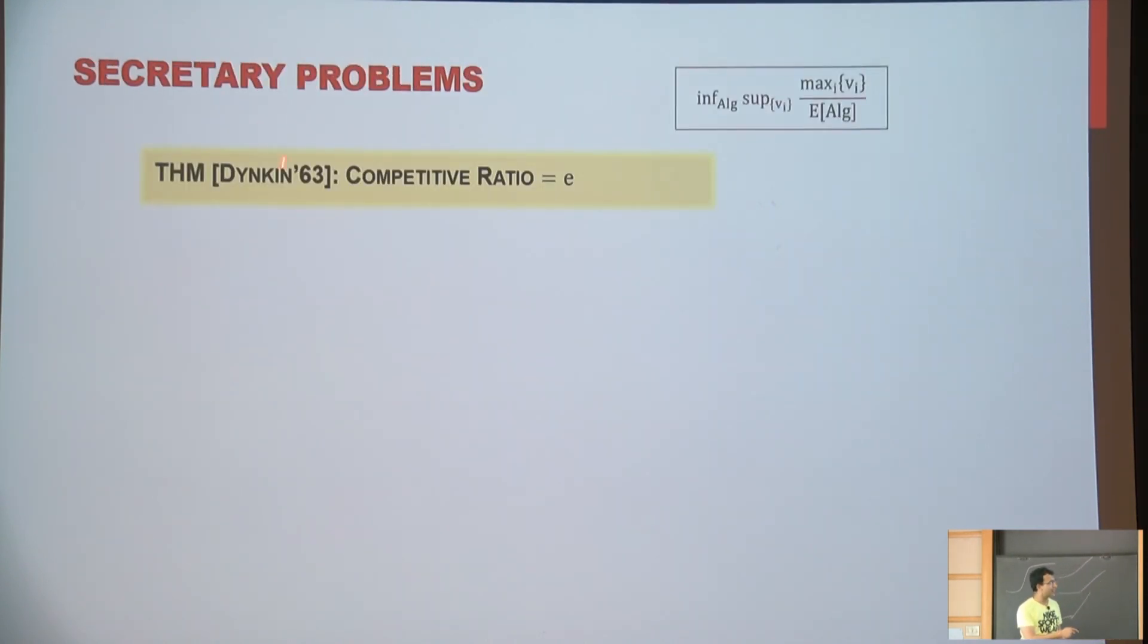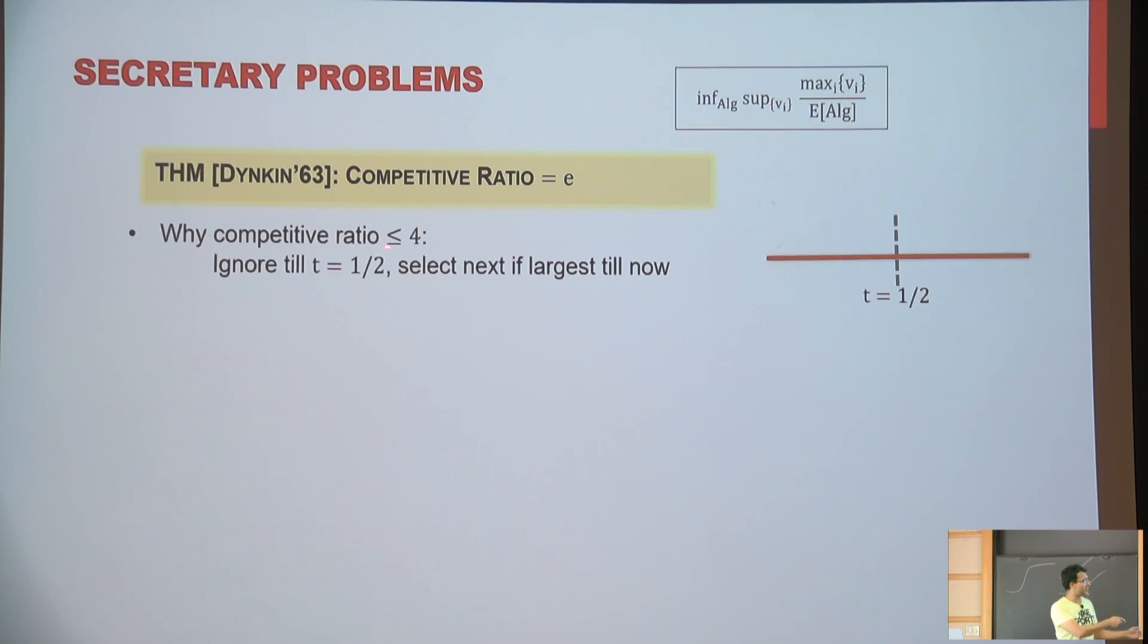And so this problem that I mentioned, the diamond selling in this model is classically known as the secretary problem. It was already studied by Dinkin and all in the 60s. And it's known that the competitive ratio is E. Here's a very simple argument why it's at most four. Imagine this time horizon, just ignore all your buyers that arrive in the first half. And accept the first buyer, which arrives in the second half, which is larger than the entire prefix.